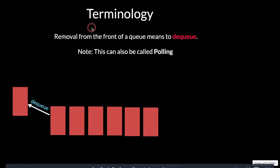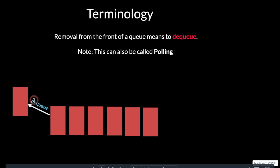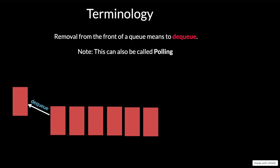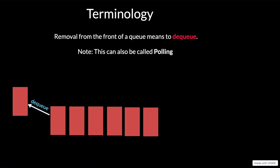The other key terminology is dequeue. Dequeue means you remove an element from the front of the queue. This can also be called polling — you can say you polled one element from the queue, which means the same as saying you dequeued an element. Those are the two main terms used with a queue.